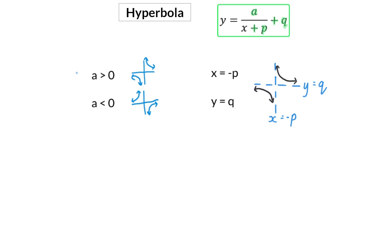Remember that the sign of the a value indicates how the hyperbola is positioned. The p value with the opposite sign gives us the equation for the vertical asymptote, and the q value with exactly the same sign gives us the horizontal asymptote.